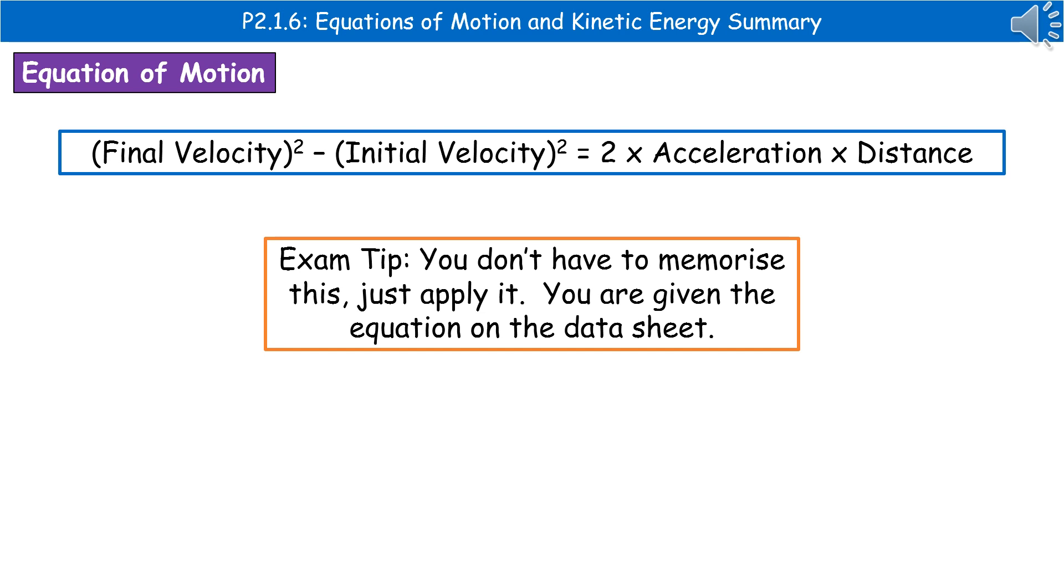Good news, you don't have to learn this one. So this is the one that will be given to you on the data sheet in the exam. So remember that other bit of paper on your desk, turn it over, you'll find some useful formulas, including this one here. So final velocity squared minus the initial velocity squared is 2 times acceleration times distance.